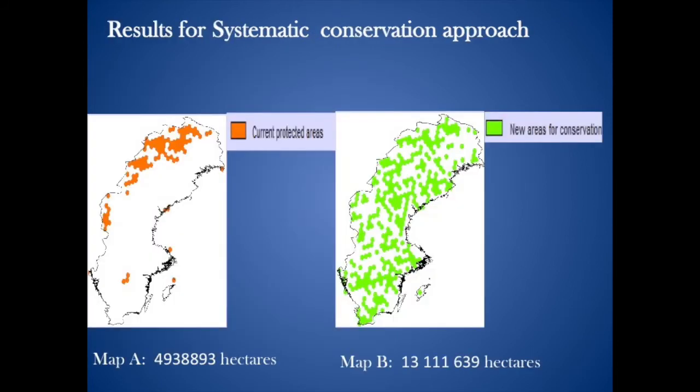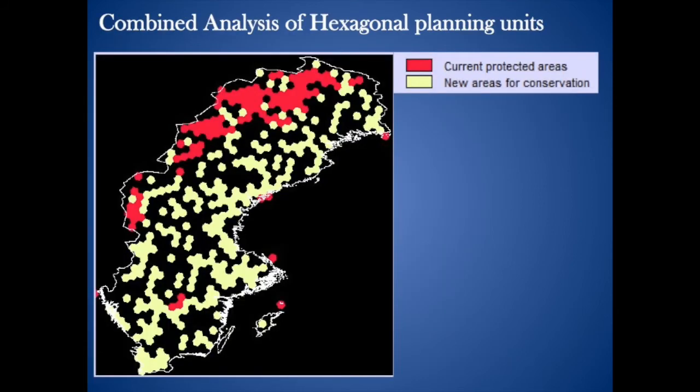The results for systematic planning units. The results produced by Marksen for the systematic planning units illustrate map A being current protected areas of Sweden and map B being new areas for conservation. The total area that the species are currently protected in is 4,938,893 hectares, whereas the new areas for conservation that Marksen generated covers an additional 13,111,639 hectares, as you can see more clearly in map C.